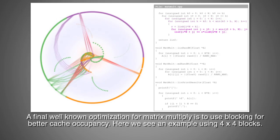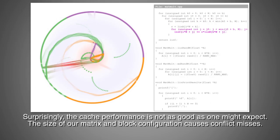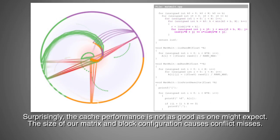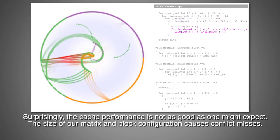Here we see an example using 4x4 blocks. Surprisingly, the cache performance is not as good as one might expect. The size of our matrix and block configuration causes conflict misses.